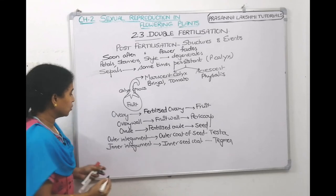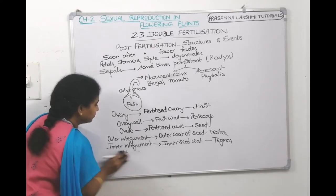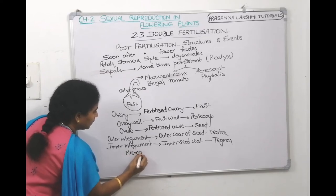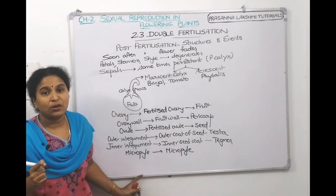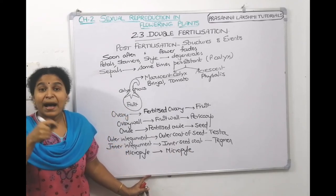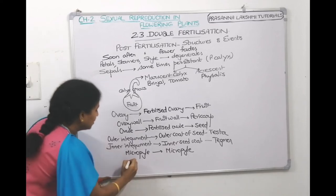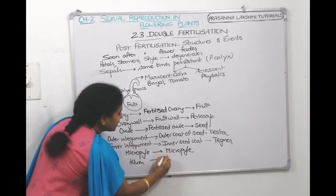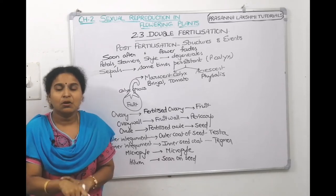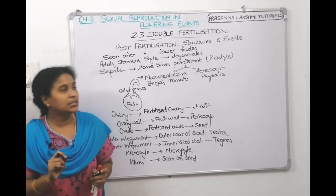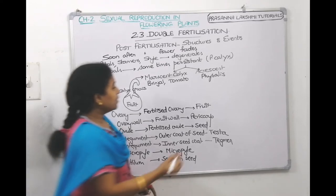The micropyle on the ovule will remain as the micropyle (a pore) on the seed as well. The hilum — the part where the funicle is attached to the ovule body — remains as a scar on the seed. After fertilization, the antipodals and synergids also degenerate.